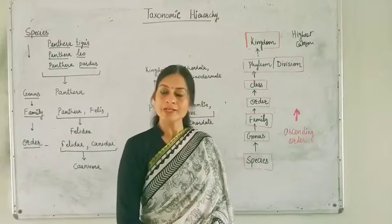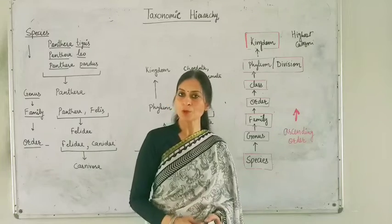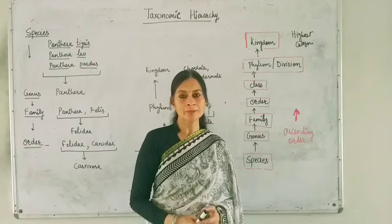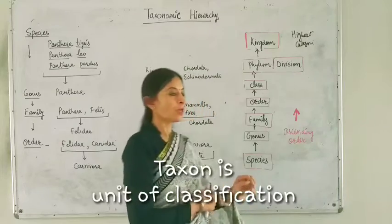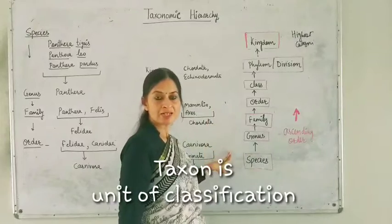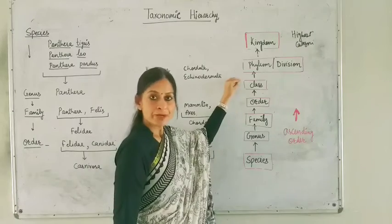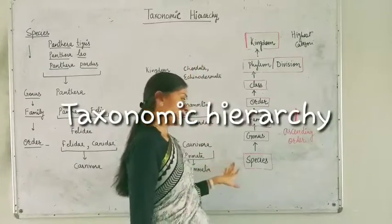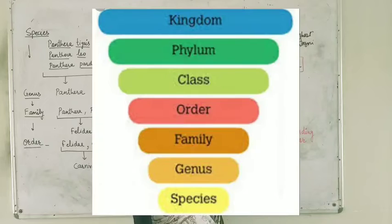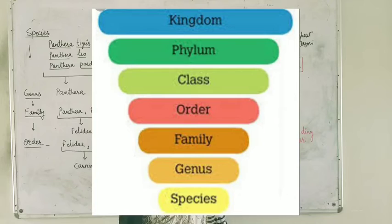Dear students, in today's lecture we are going to discuss different types of taxonomical categories, or you can call them the taxa. The taxon is the unit of classification. I have shown a number of categories or taxa arranged in a systematic framework called the taxonomic hierarchy. At the bottom is species, then genus, family, order, class, phylum or division, and the highest category is kingdom.